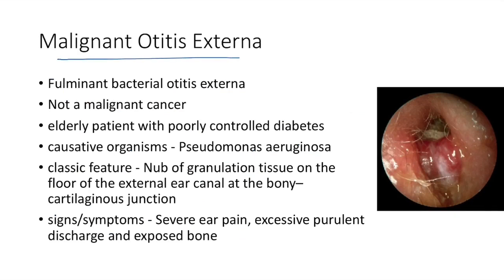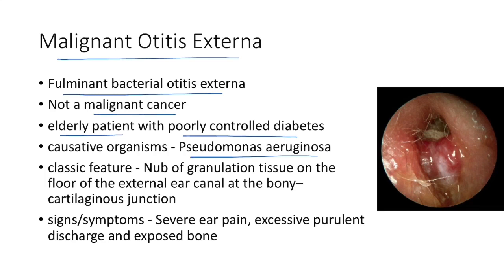Malignant otitis externa, also known as necrotizing otitis externa, is a fulminant bacterial otitis externa — not a malignant cancer, so the name is a misnomer. It usually affects elderly patients with poorly controlled diabetes. The causative organism is Pseudomonas aeruginosa. The classical feature is a nub of granulation tissue on the floor of the external ear canal at the bony-cartilaginous junction.